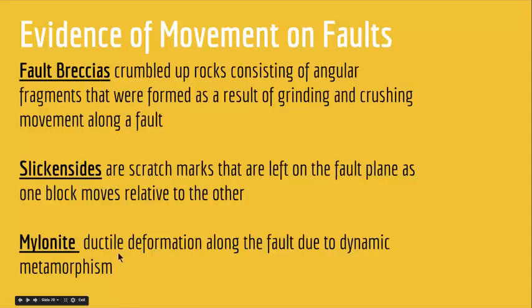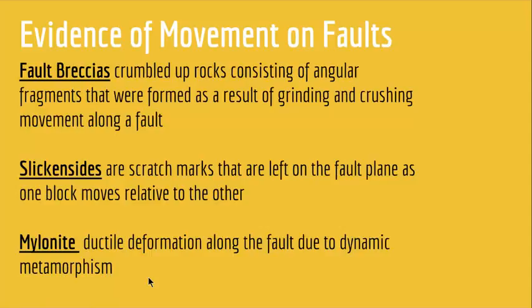Finally, mylonites are ductile deformation along the fault due to dynamic metamorphism. In a region where a fault exists, when movement occurs, the high pressure creates high temperature, resulting in ductile deformation called mylonite. Since we have ductile deformation, this is evidence of movement on the fault.